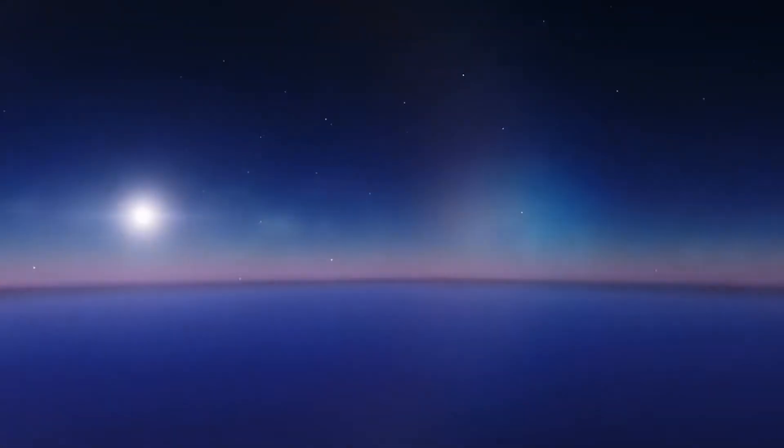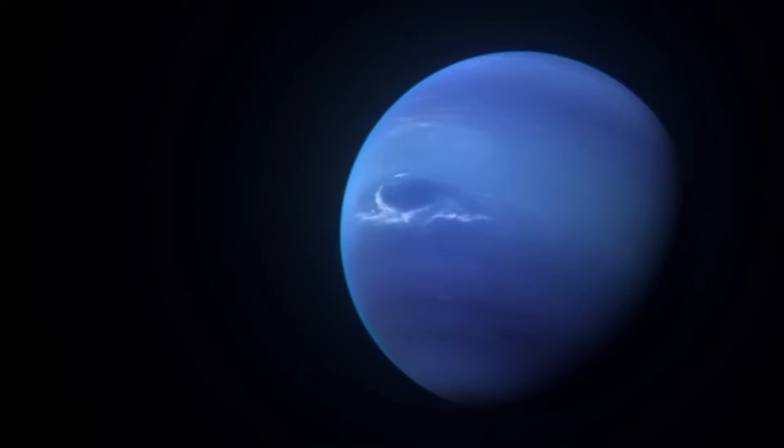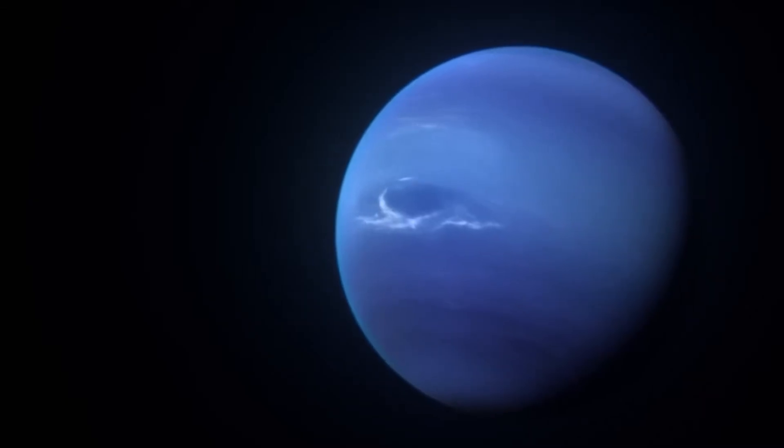Clouds and storms: Neptune's atmosphere is known for its dynamic and turbulent weather patterns. It features a series of cloud bands and storm systems, including the great dark spot and other smaller vortices. The clouds are primarily composed of icy compounds, such as methane and ammonia.